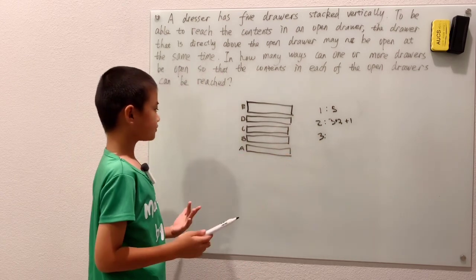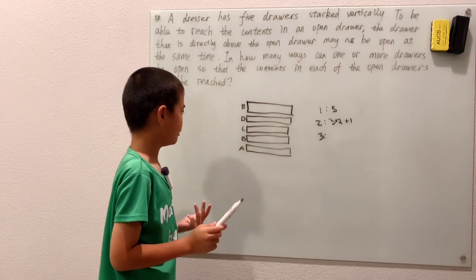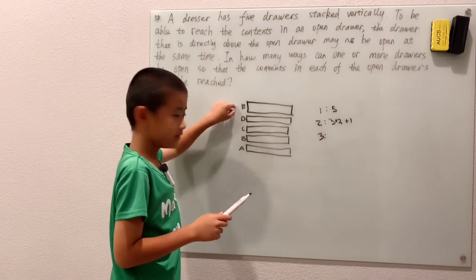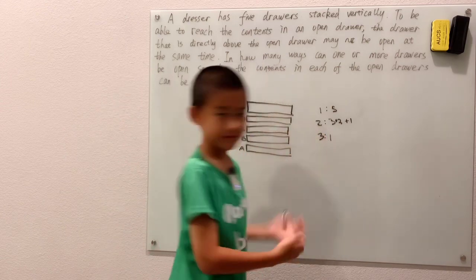For three, well, if A is open, then automatically we have C and E. That's one choice. And that's it.